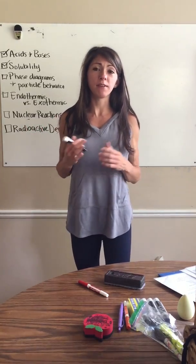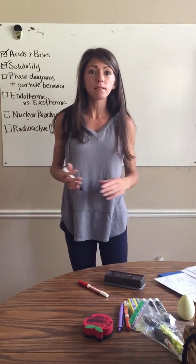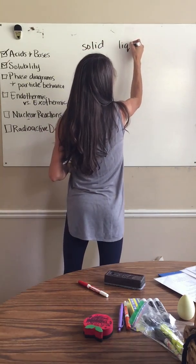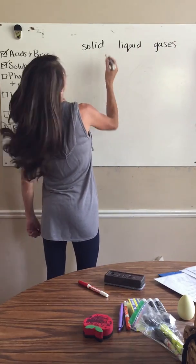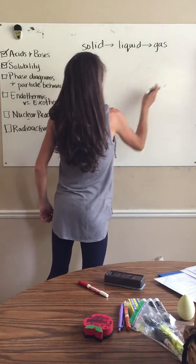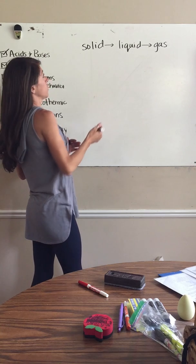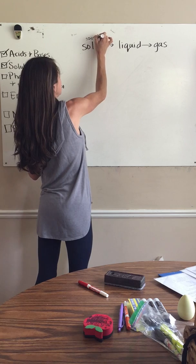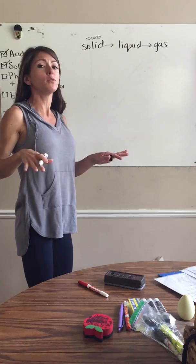Next we're going to talk about the phases of matter, which are just the states of matter. You've been learning about this since you were like six. We're going to talk about solids, liquids, and gases. When you are going from a solid to a liquid or a liquid to a gas, it's really important to understand what's going on with the particles. Matter in the solid state is very tightly packed together with very little movement — there's very, very low kinetic energy.